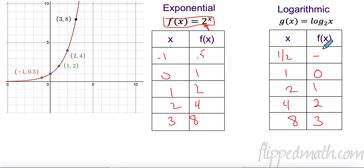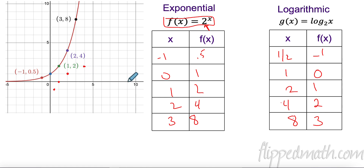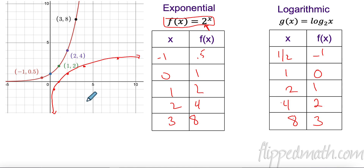Now we can plot these points: one-half and negative one, one and zero, two and one, four and two, and eight and three. If I draw this logarithmic graph — of course I'm not really great at it, but you get the point — these two things are inverses.